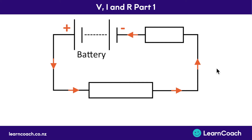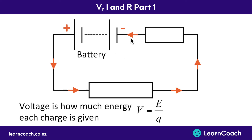Voltage is how much energy the battery gives to every charge that goes past. So if a battery was 12 volts, for every coulomb of charge that goes past this battery, it's going to give it 12 joules of energy. That's what 12 volts actually means — 9 volts would give each coulomb of charge 9 joules of energy. So think of voltage like the amount of energy that a charge has, because that's actually what it is.